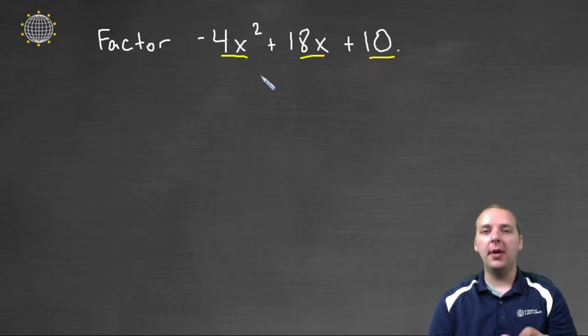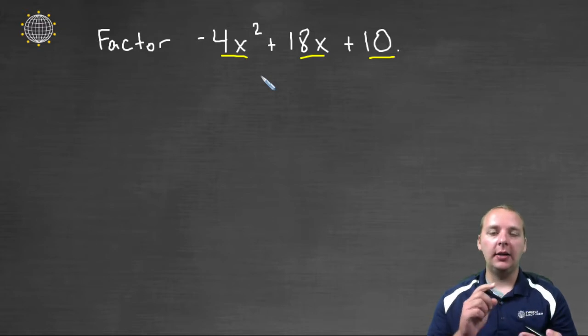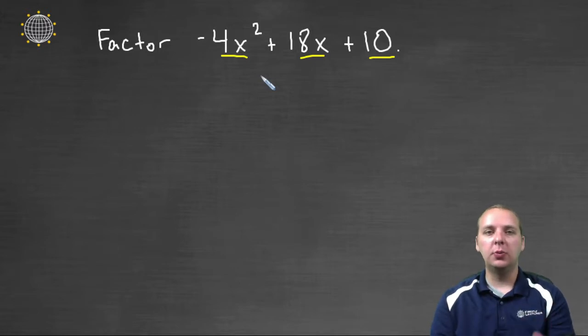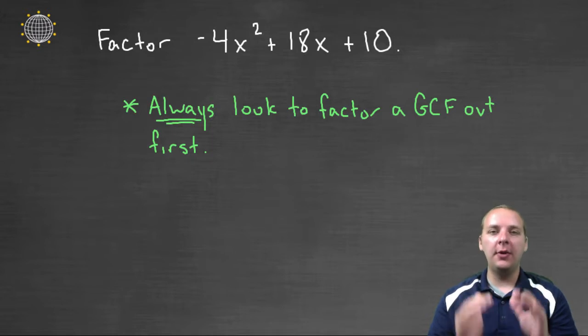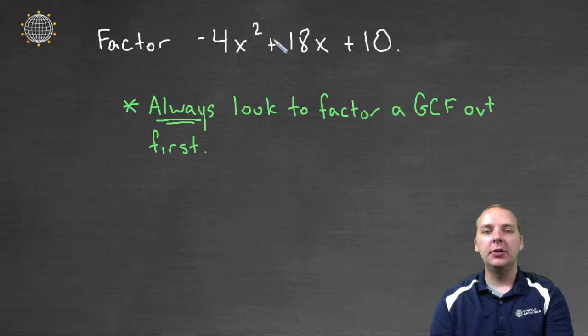I've got a couple different methods that can handle these types of polynomials. We could try the trial and error method, or we can factor this by grouping. But before we get into all those details, there's something very important we need to talk about. Whenever you're asked to factor a polynomial, the very first thing you always try every time is you look to see if this guy has any common factors among all the terms.